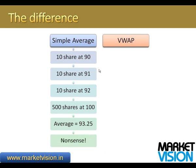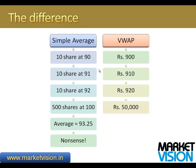Using a simple average is nonsense. So let's look at how VWAP is calculated. 10 shares at 90 rupees means 900 rupees was spent; at 91 it was 910; at 92 it was 920; and 500 shares at 100 is 50,000 rupees — a whole factor more for the last transaction. Adding all of this up gives 52,730, divided by the total shares bought which is 530, giving a VWAP of 99.49 — much closer to the 100 rupee mark where most transactions occurred.